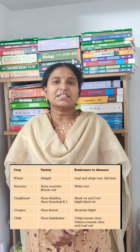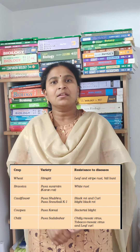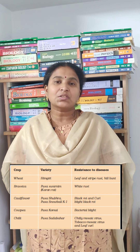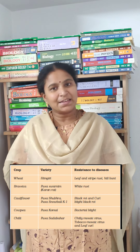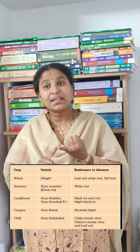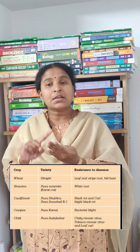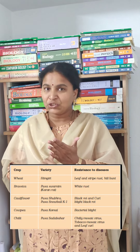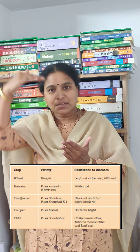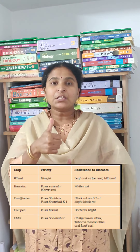Welcome to the trick series. In Strategies, Chapter 9, there is Table 9.1 on disease resistance varieties. Under that, they have given five varieties of plants: wheat, brassica, cauliflower, cowpea, and chili. For these five plants, we have to remember the improved variety names and against which disease they show resistance.